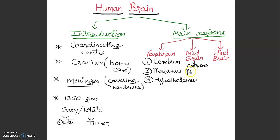Corpora quadrigemina. The hindbrain has three parts. First is cerebellum. Cerebrum and cerebellum, don't confuse students. Cerebrum is part of forebrain and cerebellum is part of hindbrain. Cerebellum, second is pons, and third one is medulla oblongata.